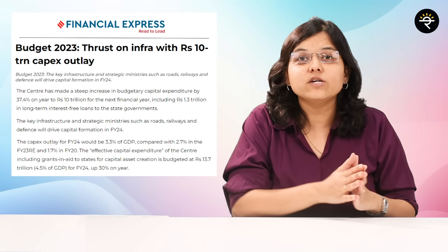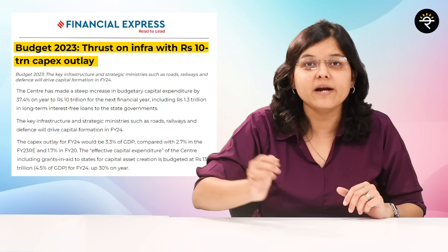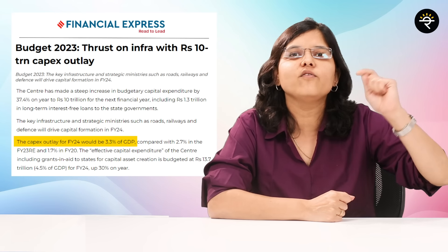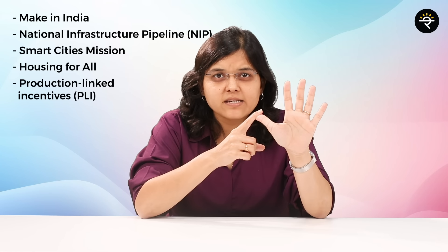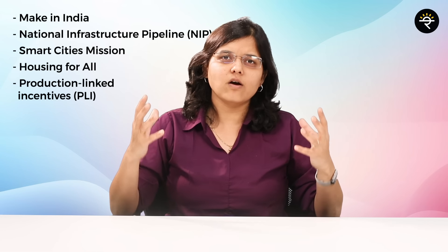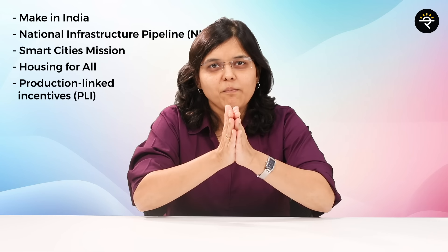Infrastructure is actually the backbone of any economy, and India is also taking certain measures. In the budget of 2023-24, a budgetary allocation of 10 lakh crore rupees was made, which was almost equal to 3.3% of India's GDP. The government has also come up with schemes like Make in India, NIP, Smart Cities Mission, Housing for All, and Production-Linked Incentive.